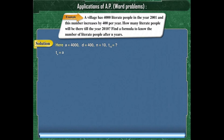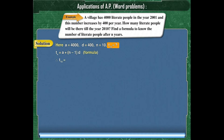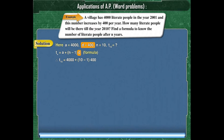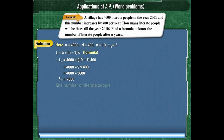Using the formula TN = A + (N − 1) × D, and substituting the given values, we get T10 = 4,000 + (10 − 1) × 400. On simplifying, we get T10 = 7,600. Therefore, the number of literate people in the year 2010 will be 7,600.